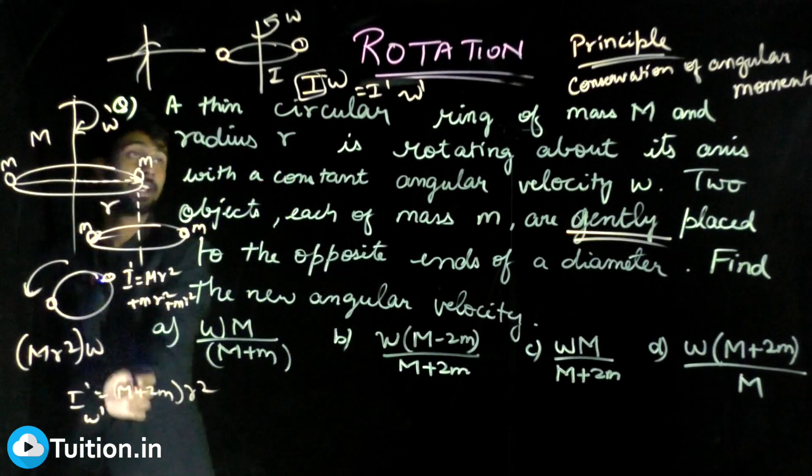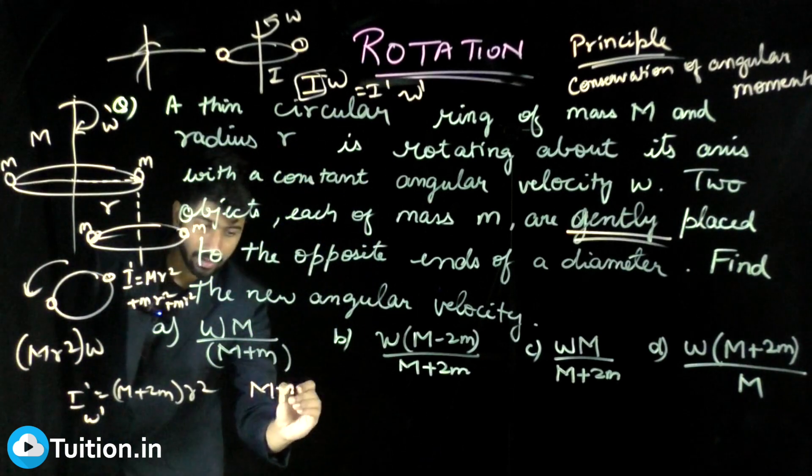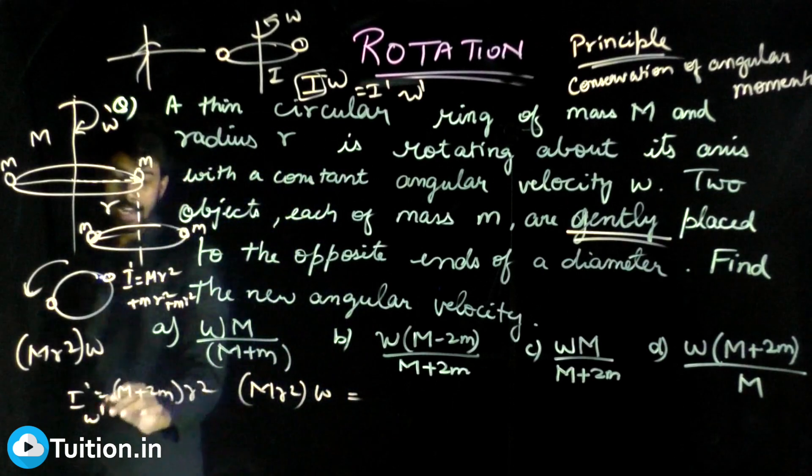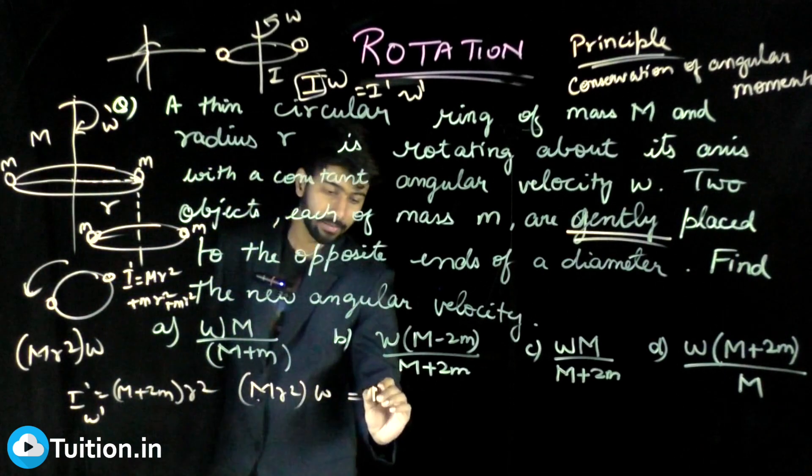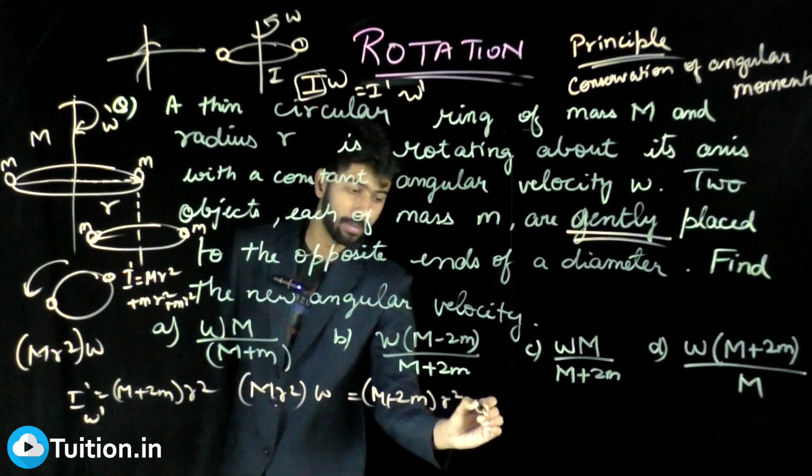Now you need your omega dash. So just use this, just put this here. What you'll get is mr² into omega equals I dash, which is m plus 2m into r² times omega dash.